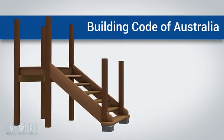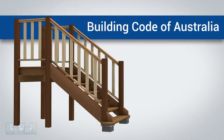The Building Code of Australia, or BCA, specifies that a balustrade must be provided along a stairway, floor, or landing if its level above the surface below is more than one meter.